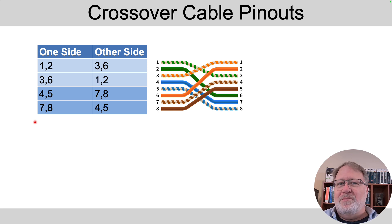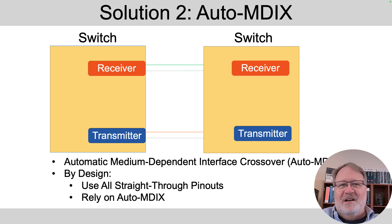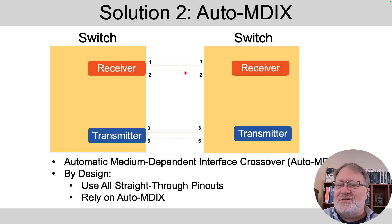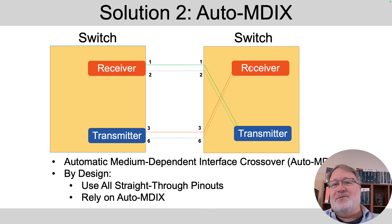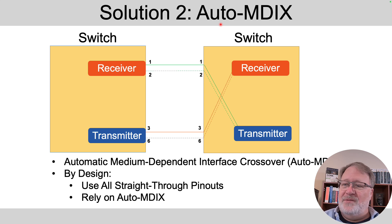The second solution is Auto-MDIX — Automatic Medium-Dependent Interface Crossover — a standard where the electronics figure it out for you. You still use a straight-through cable between two switches, but the Auto-MDIX logic sends signals back and forth, detects that a straight-through cable is in place, and internally swaps pins 1 and 2 down to the transmitter and pins 3 and 6 up to the receiver on one end — effectively creating a crossover in software. As of 2025, most installations just run all straight-through pinout cabling and rely on Auto-MDIX throughout the enterprise.